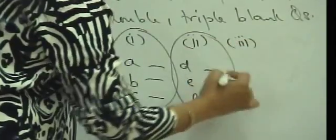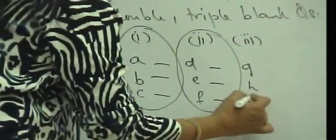If you have a three blank question, then you have a third column of words. Then you have G, H and I. And you will have to select from the third column.